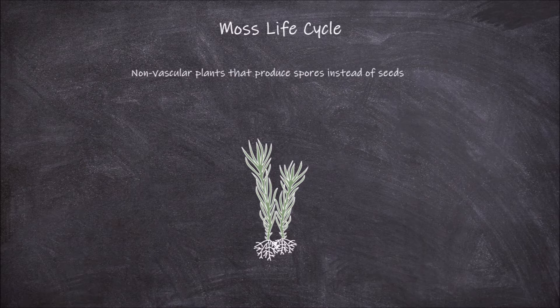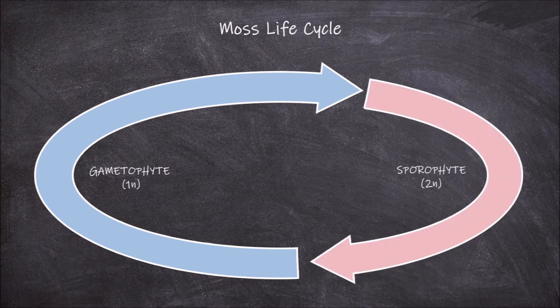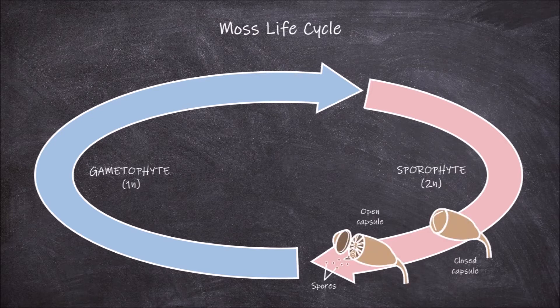Mosses undergo an alternation of generations in their life cycle, which consists of two generations: the gametophyte generation, which is haploid, and the sporophyte generation, which is diploid. The gametophyte generation starts with haploid spores being released from capsules on the ends of the moss sporophytes.